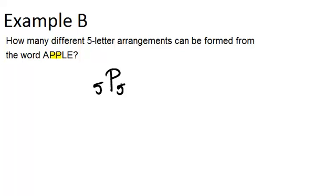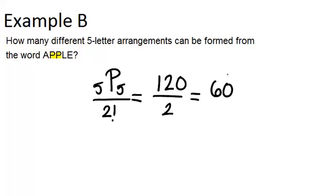But because there are two P's, we divide by two factorial in order to account for the repetitions. So just like last time, 5P5 is 120 and two factorial is two. So our answer will be 60 different ways or 60 different five letter arrangements can be formed from the word apple.